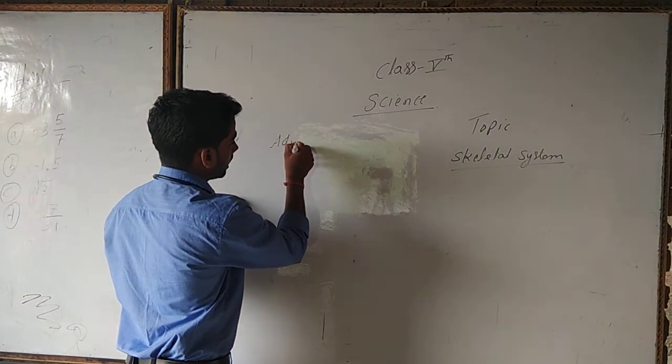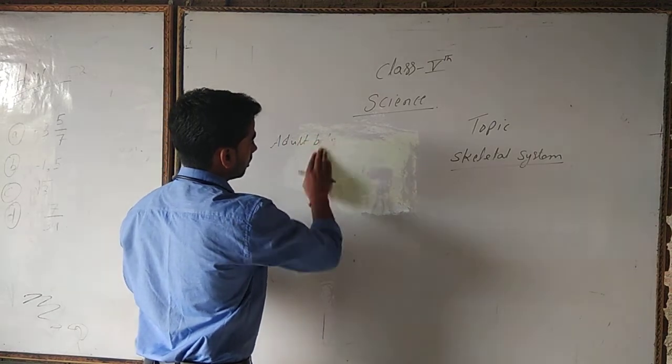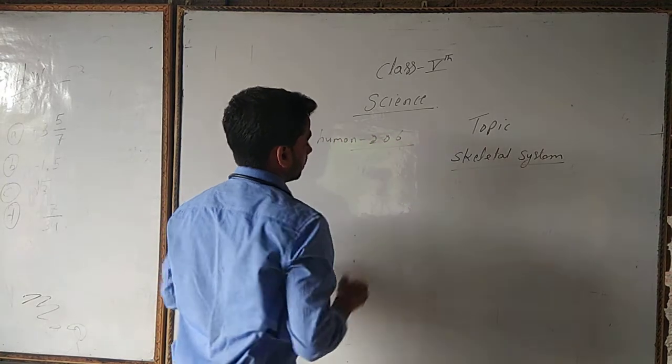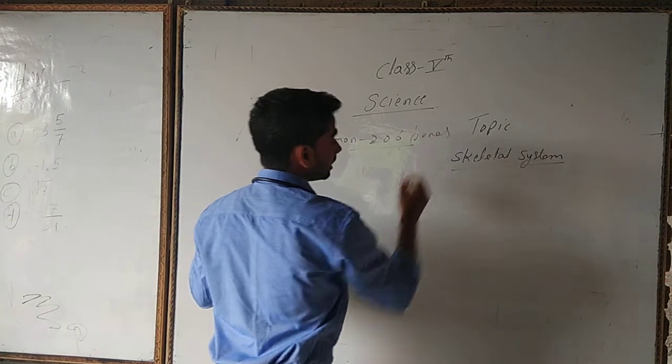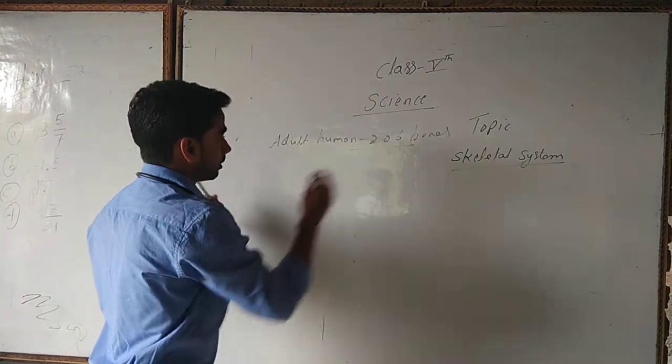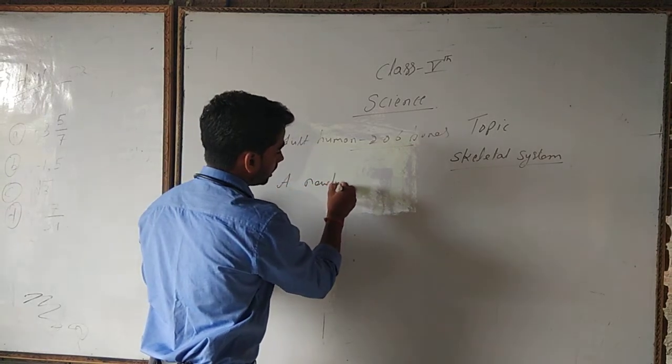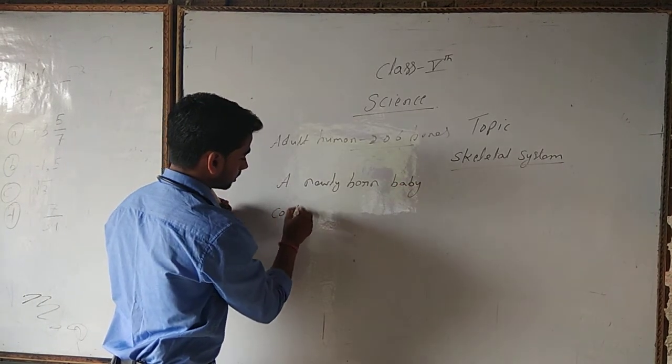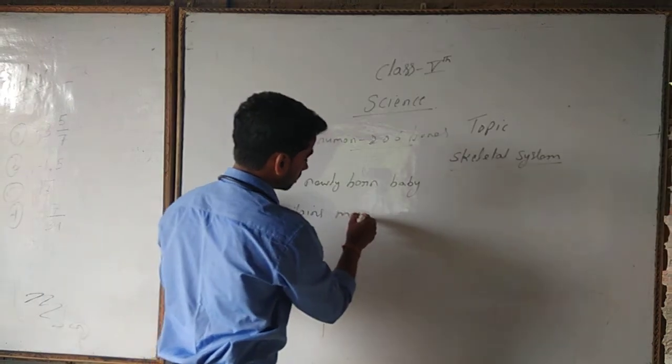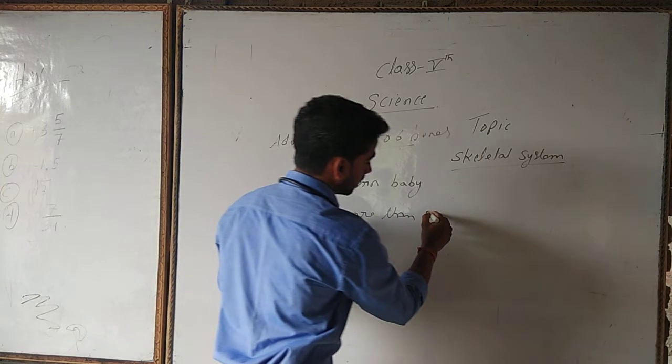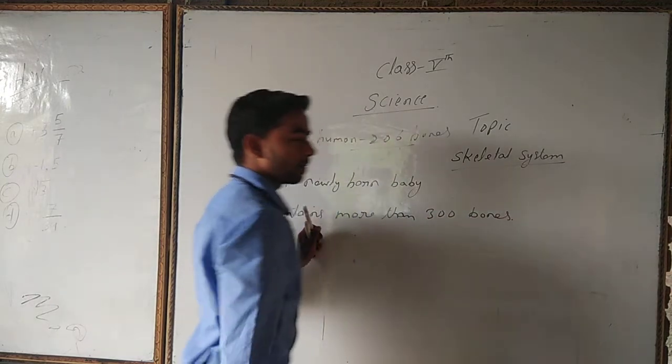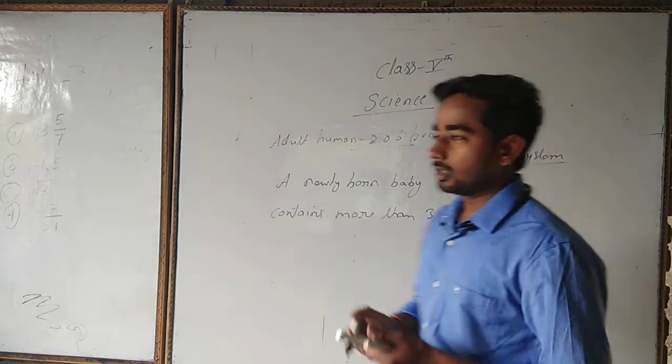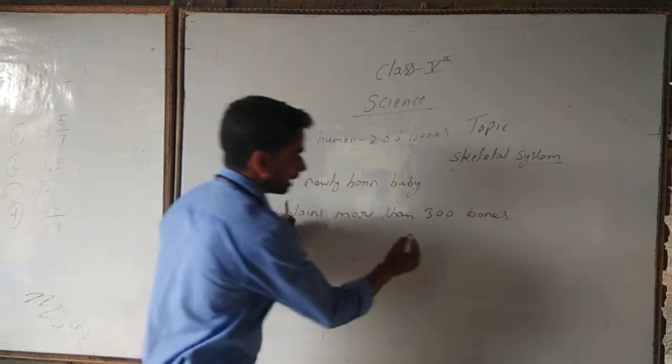An adult human body contains 206 bones, but there is a fact about bones. A baby is born with more than 300 bones, and as the baby starts developing, the bones fuse and join together to form 206 bones. That we call the skeletal system.